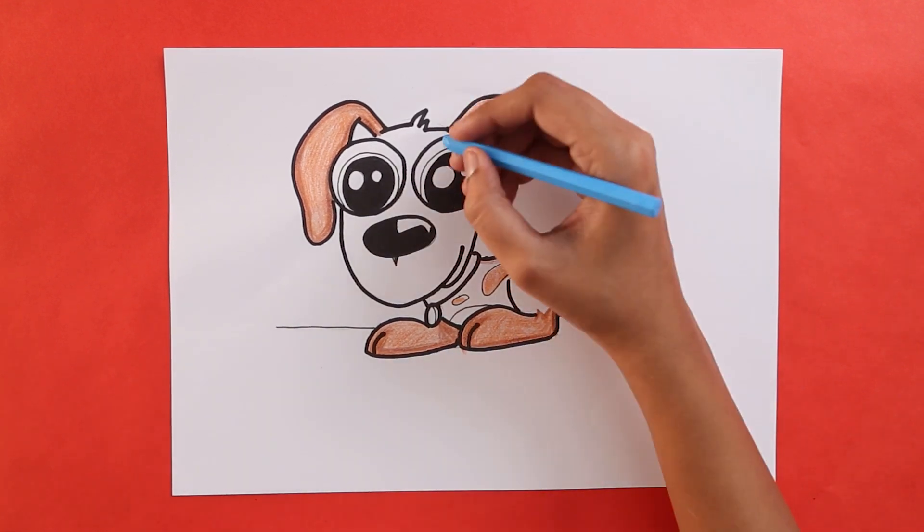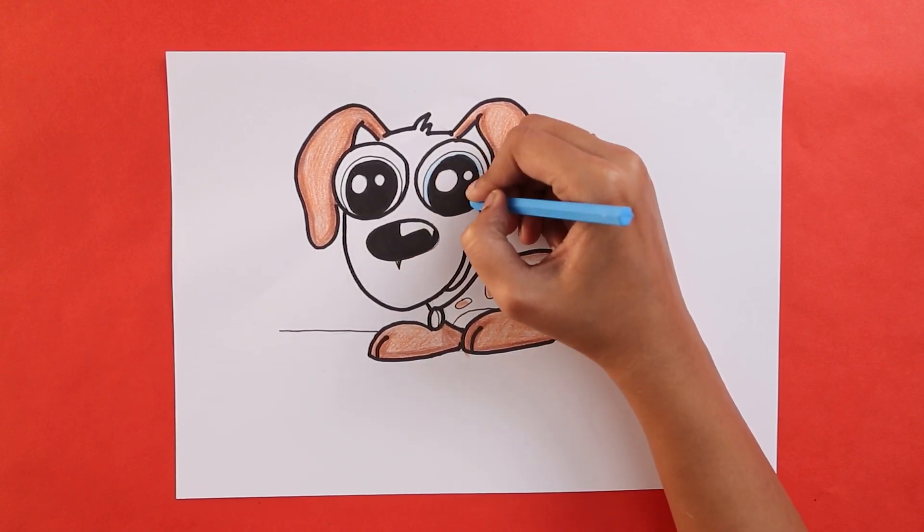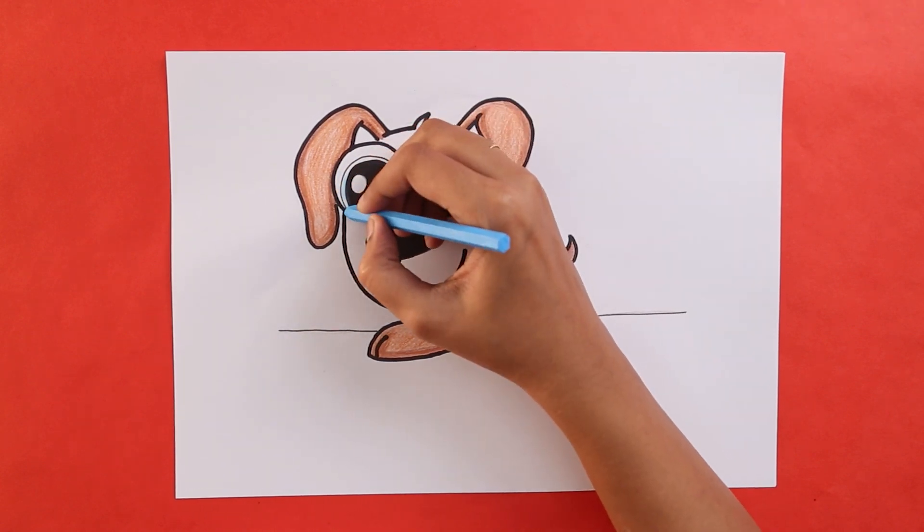For the eyes, we'll use the color blue. Cause who can resist a dog with blue eyes? Make sure to only color the thin line inside the eye and not the whole eye itself.